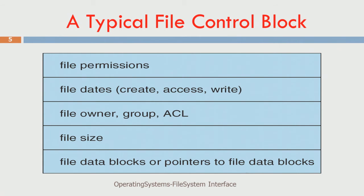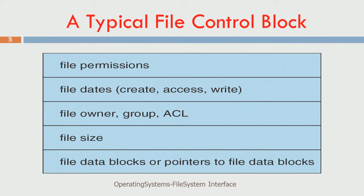Now let us look at the typical file control block. It has file permissions - who can create, delete, or write into the file. File dates and last modified times - for example, a disgruntled employee going and changing a boot time variable - we can track when it was last changed with access time. Then who is the owner of this file, which group it belongs to, the access control list, and the size of the file. These are all attributes of the file.